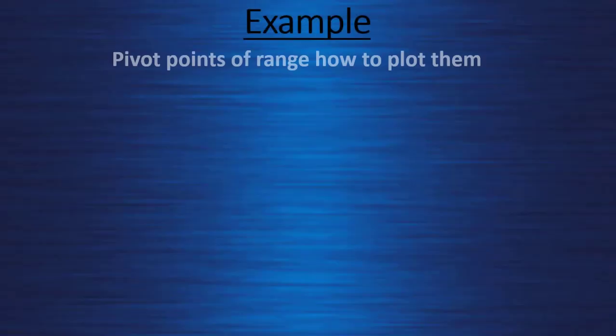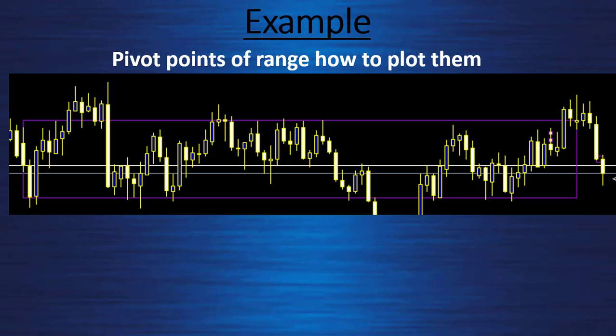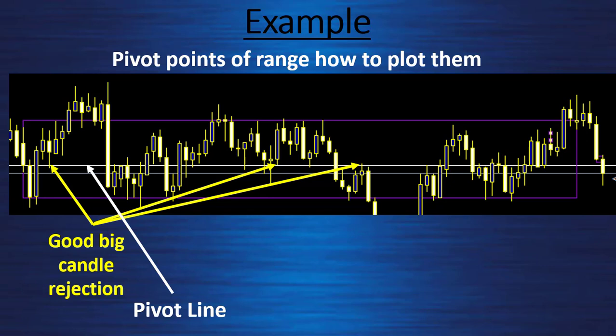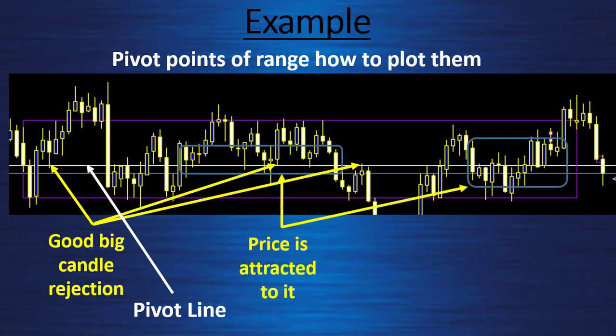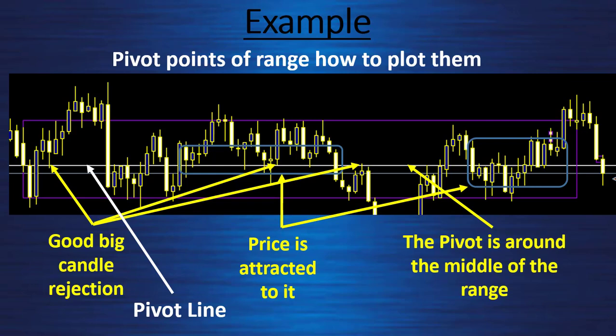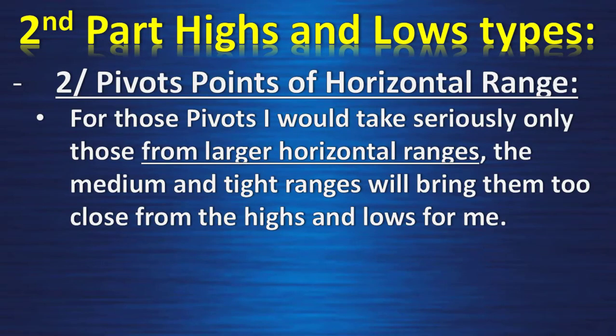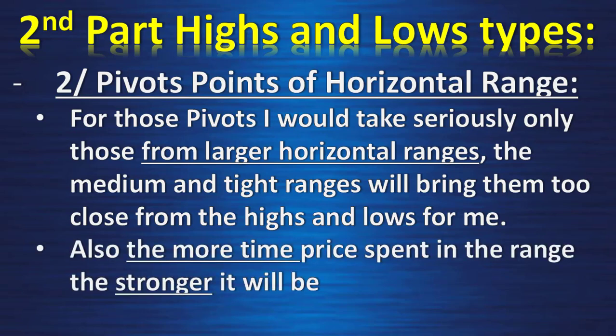Another example: the bigger range. The pivot line is my white line. We have good big candle rejections, and price is attracted to it — meaning it rejects but comes back very soon. The pivot is around the middle of the range once again. For these pivot points, I would take seriously only those from larger horizontal ranges. Medium and tight ranges bring the pivot too close to the highs and lows, and there's not enough liquidity. Also, the more time price spends in the range, the stronger it will be.